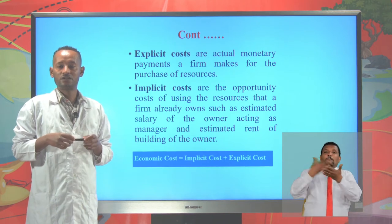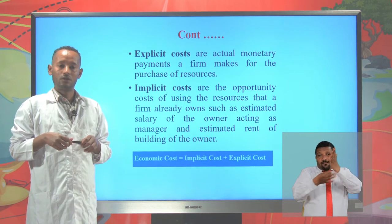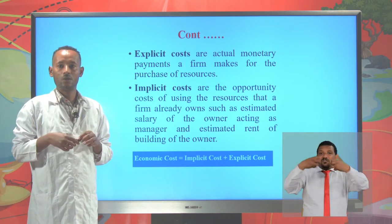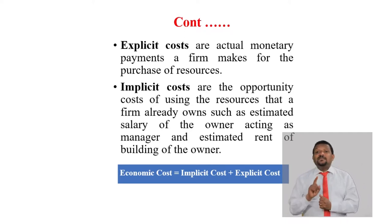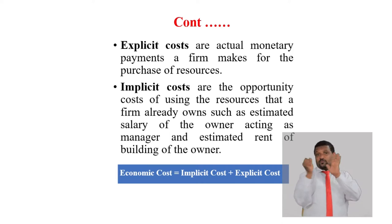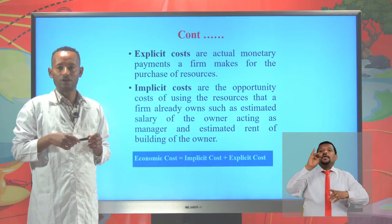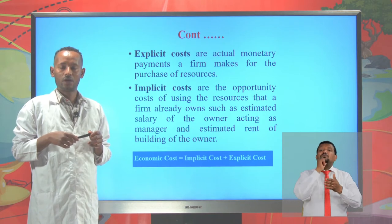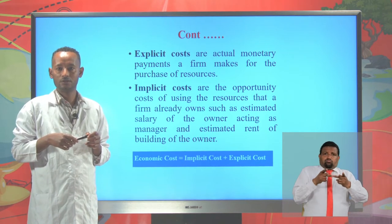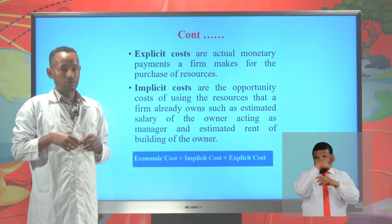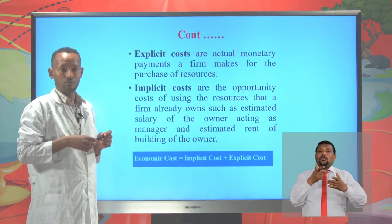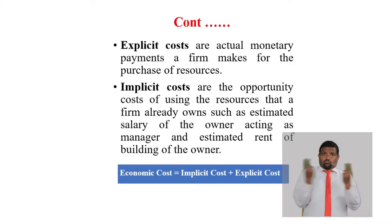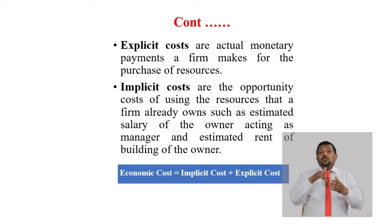Expenditures made for the purchase of oil, natural resources, raw materials, and electricity are all considered as explicit costs. But implicit costs are those costs incurred by the owner. For example, estimated rent of the owner's building is considered an implicit cost. In Ethiopia, most owners engage in production using their own premises, and these estimated rents are implicit costs. The salary of the owner acting as a manager is also considered an implicit cost.